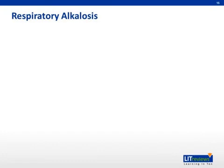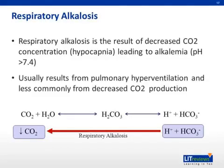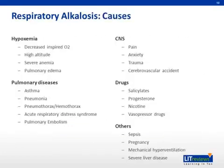Finally, respiratory alkalosis. Respiratory alkalosis is the result of decreased CO2 concentration, also known as hypocapnia, and this leads to alkalemia, or a pH above 7.4. Respiratory alkalosis usually results from pulmonary hyperventilation and less commonly from decreased CO2 production. The most common cause of respiratory alkalosis is hypoxemia and pulmonary disorders.